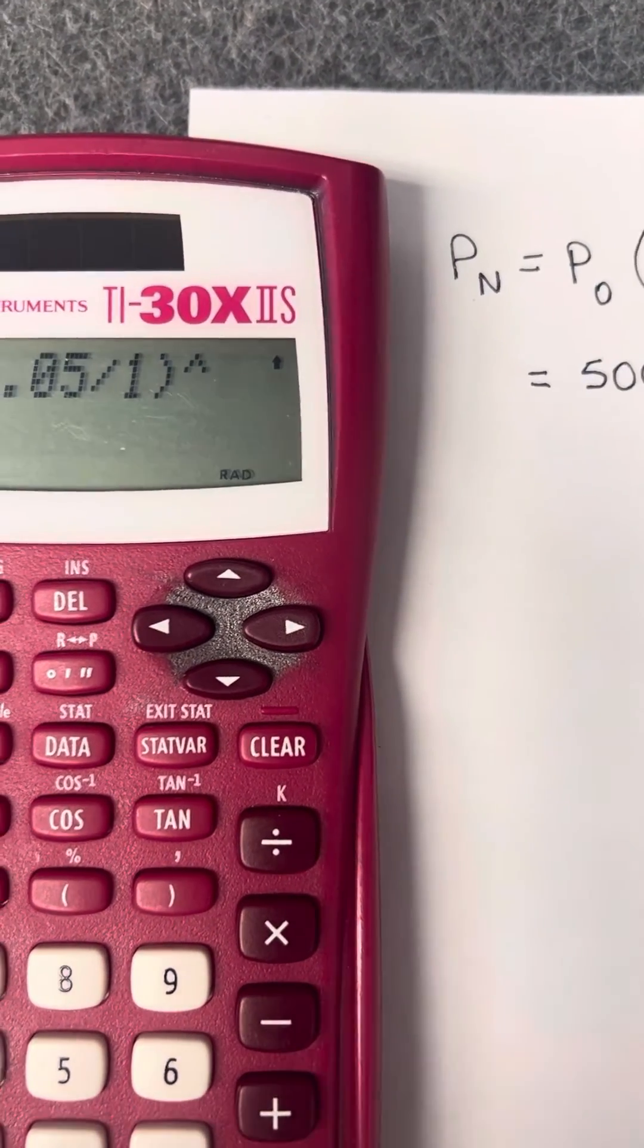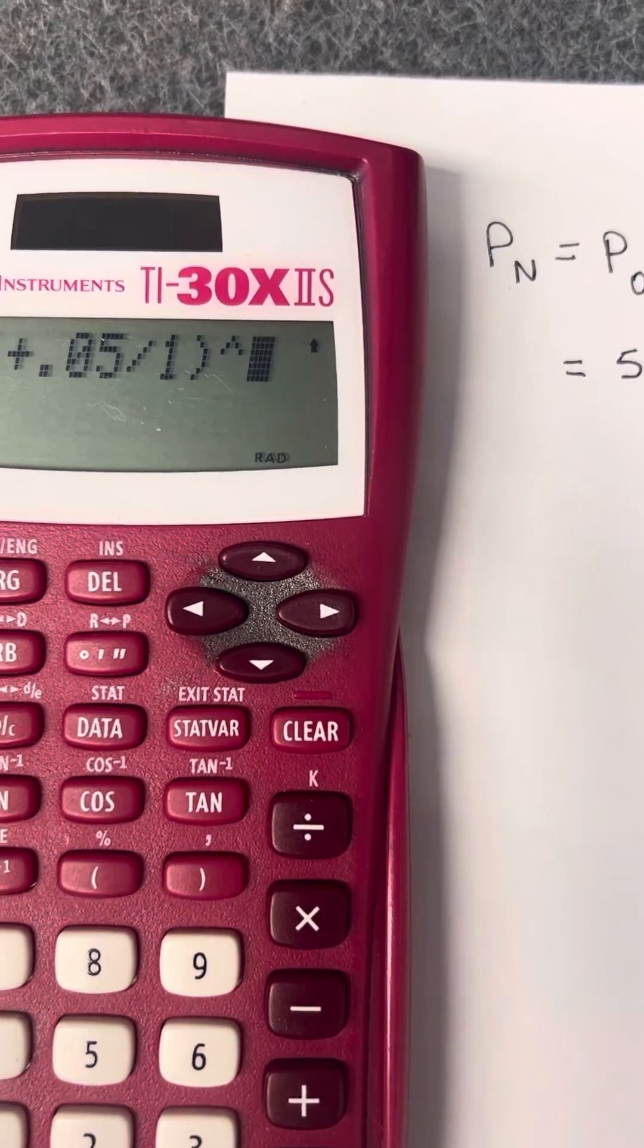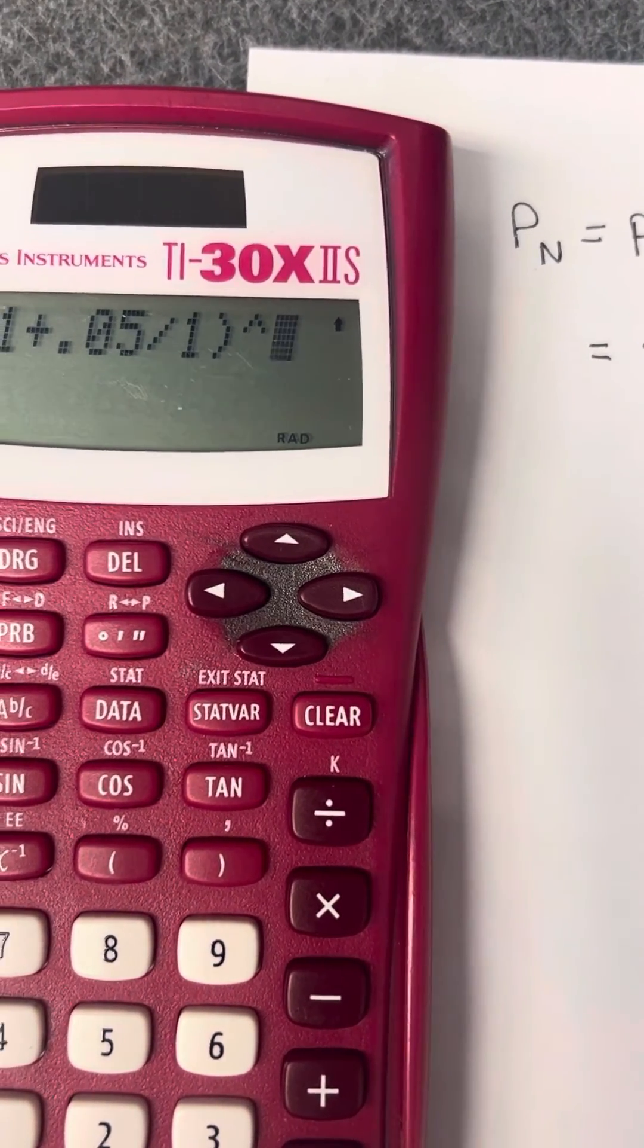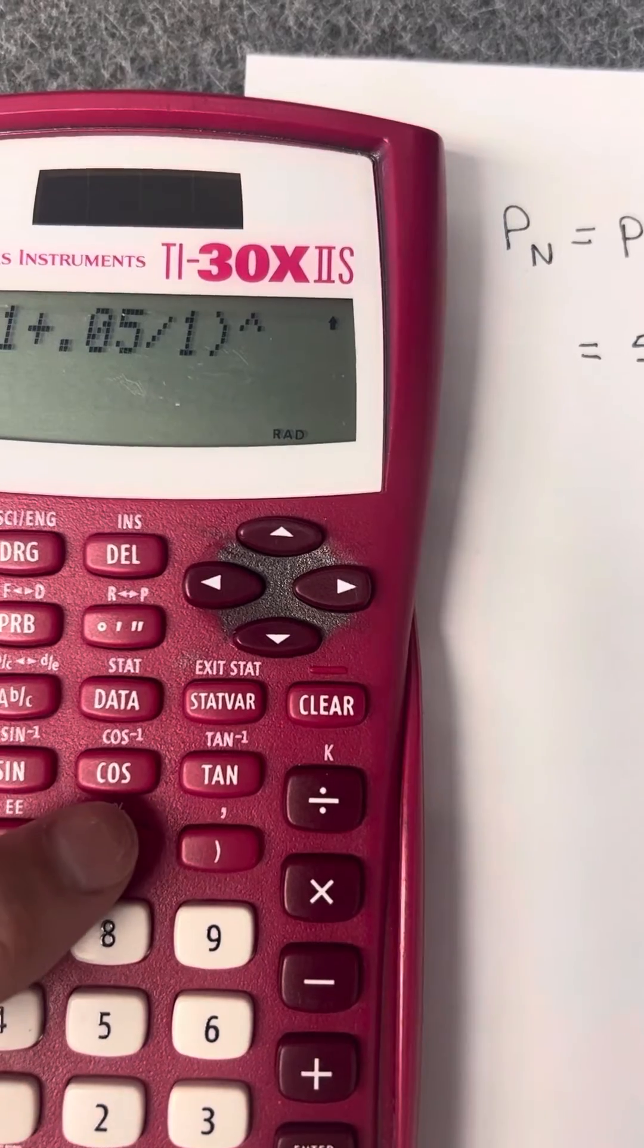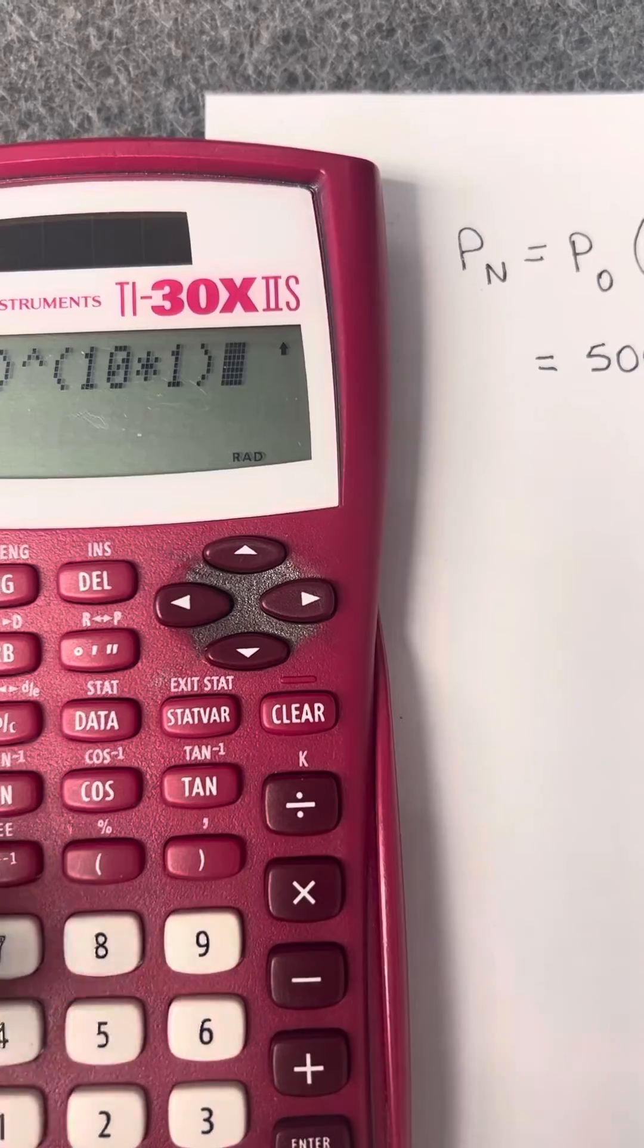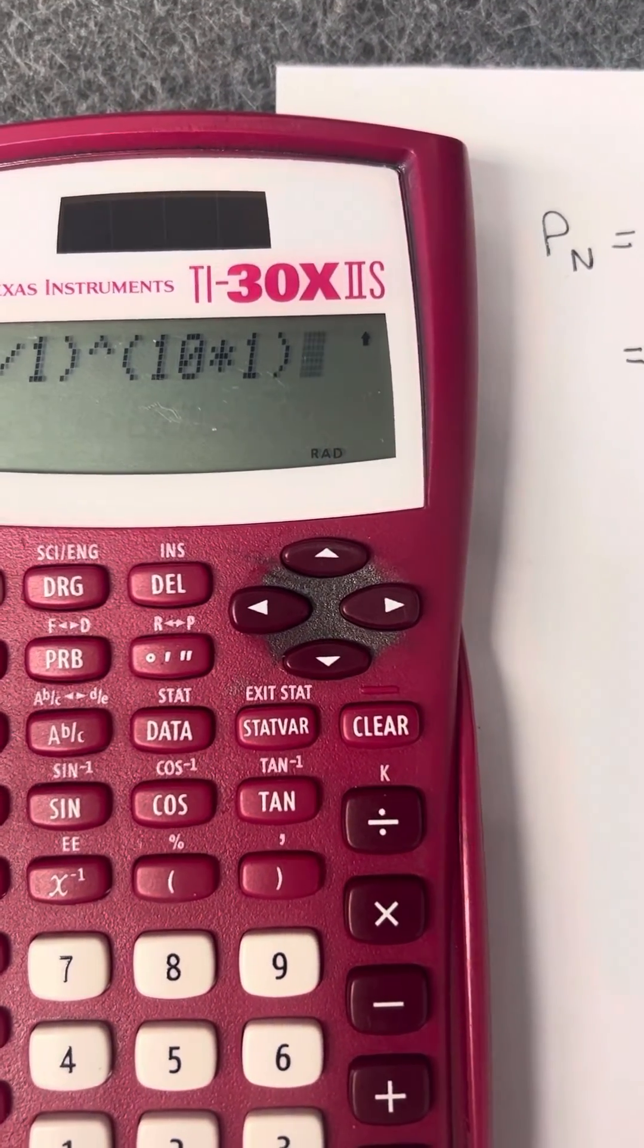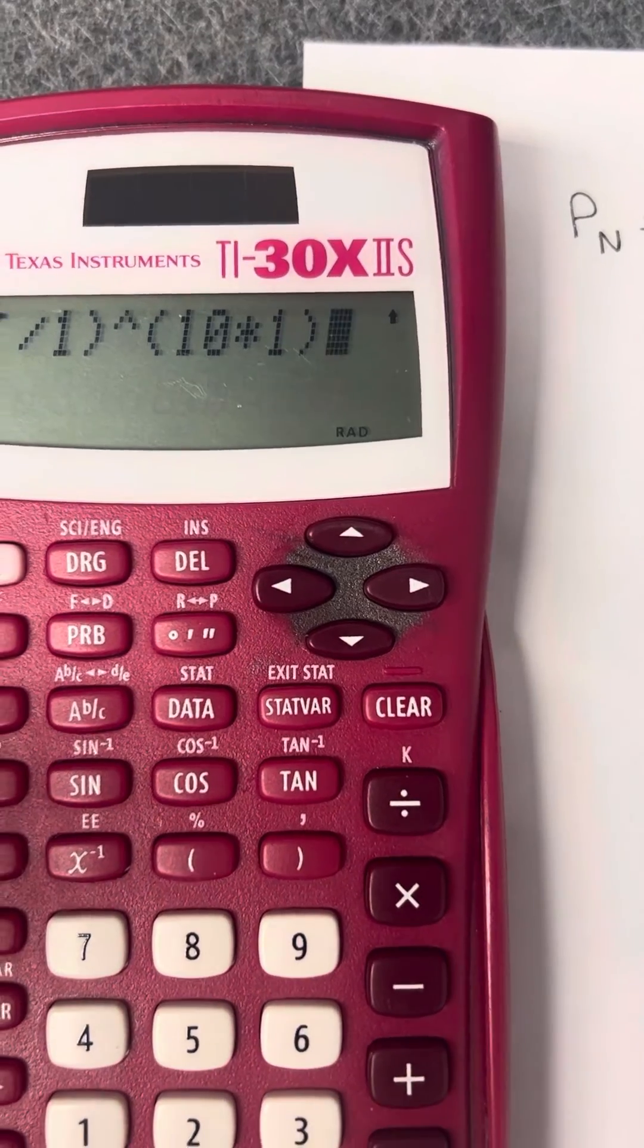Whatever you're raising it to, if it's compounded quarterly or annually and you can't just in your head multiply that out, you can put that in parentheses, 10 times 1. But if it's something easy like that, I would have just raised it to the 10th power. You just do the caret key and the number 10, and that's it.